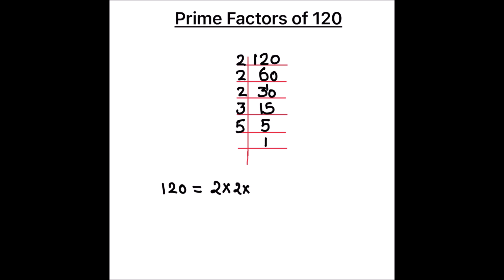So the prime factors of 120 are 2 times 2 times 2 times 3 times 5. And in exponent form we can write it as 2 raised to power 3 times 3 raised to power 1 times 5 raised to power 1.